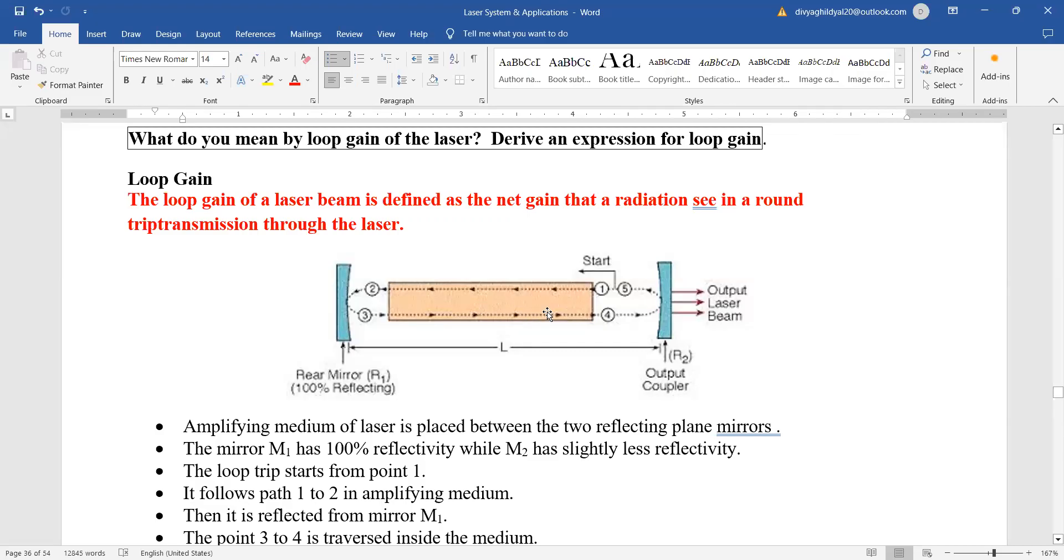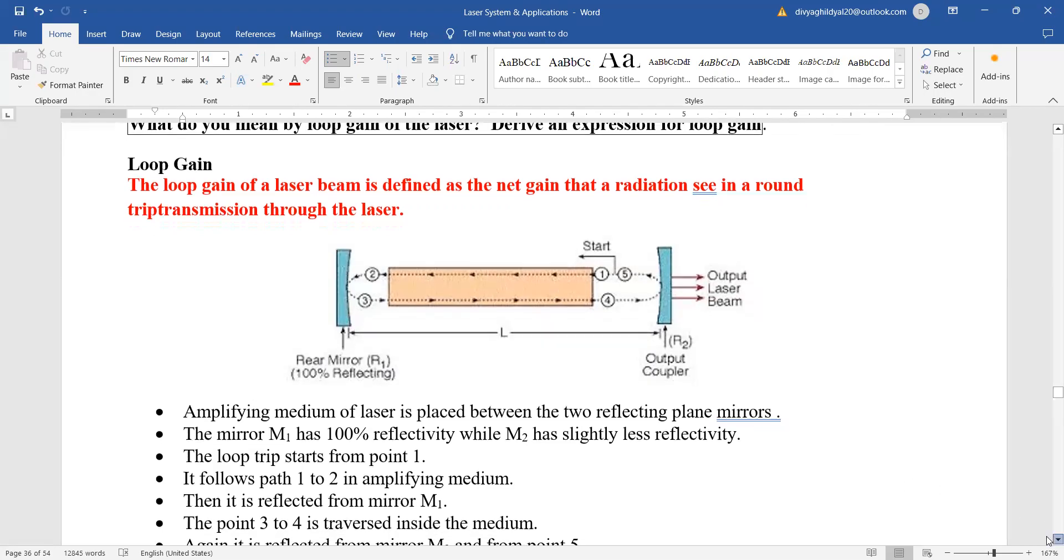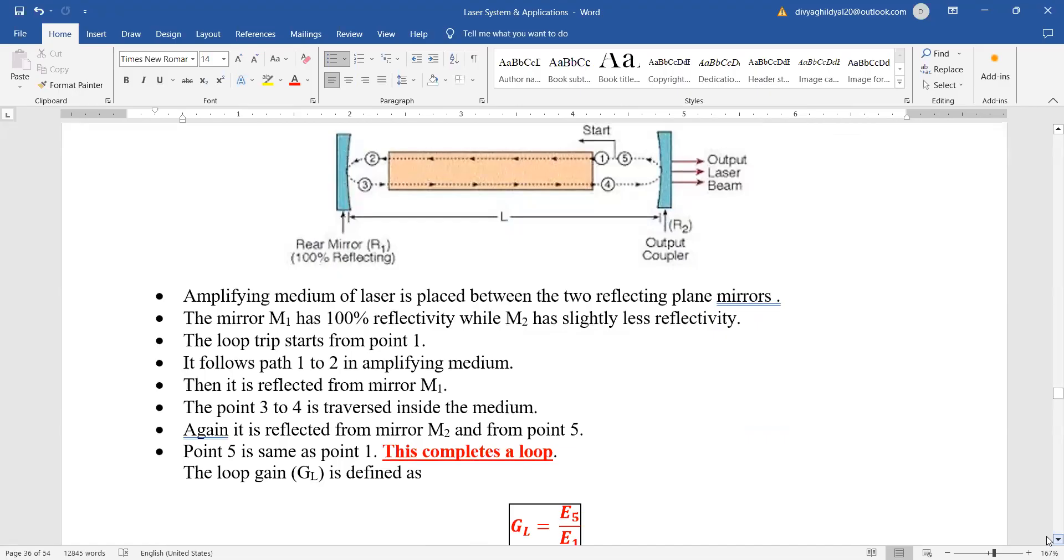Look at this diagram. Amplifying medium of laser is placed between two reflecting plane mirrors. First mirror will have 100% reflectivity and the output mirror will have slightly less reflectivity. Always remember, both mirrors will not have 100% reflectivity, otherwise it will not give an output of laser light. This trip starts from point 1, then follows to point 2 and is reflected from mirror M1. Point 3 to 4 is traversed inside the medium, then it is reflected from M2 to point 5. Point 5 is same as point 1, and this completes one loop.